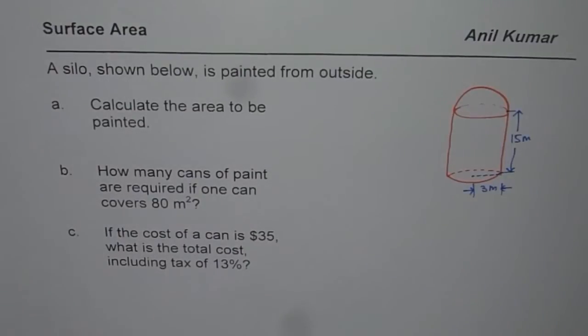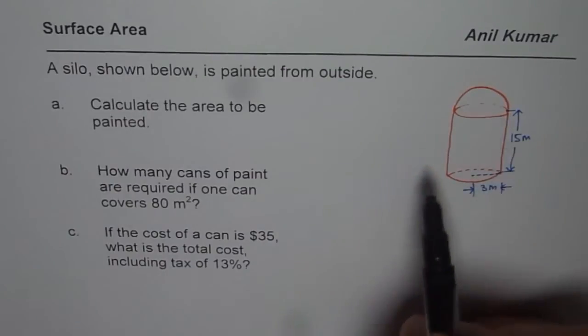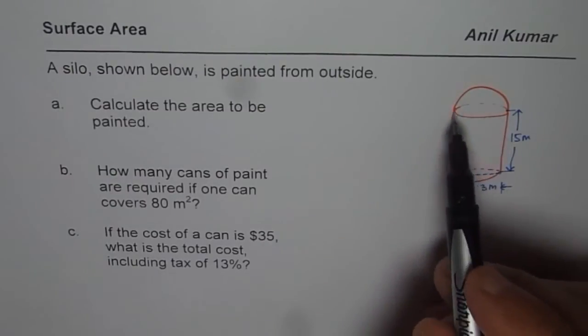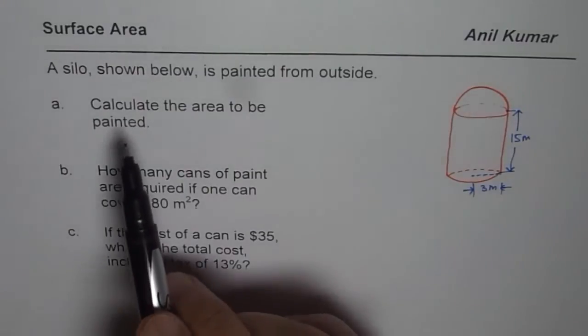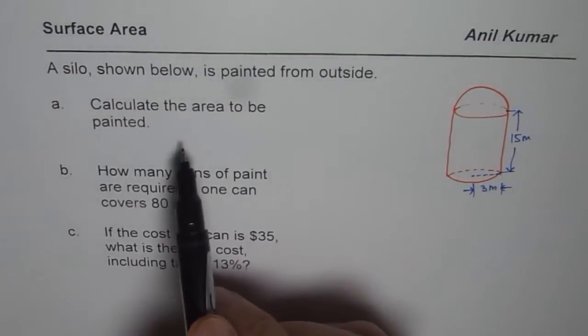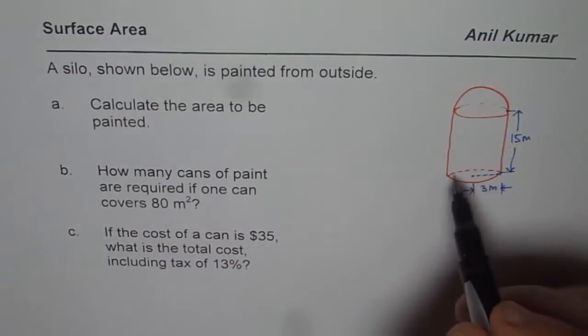I'm Anil Kumar and here is a review question on surface area of three dimensional shapes. The question here is: a silo shown below is painted from outside. So the diagram is a combination of a cylinder with a sphere on the top.